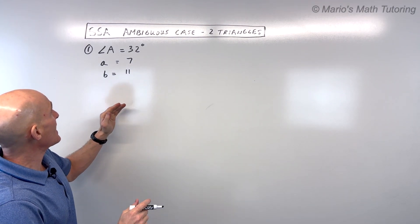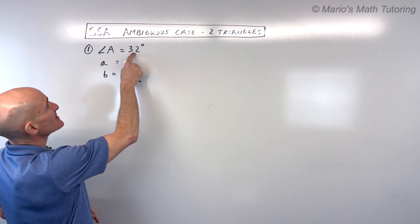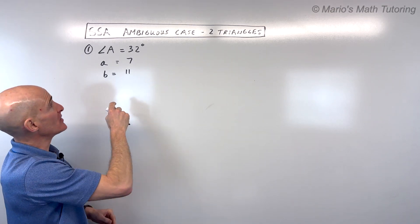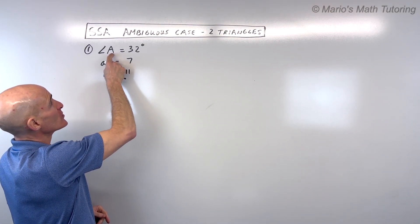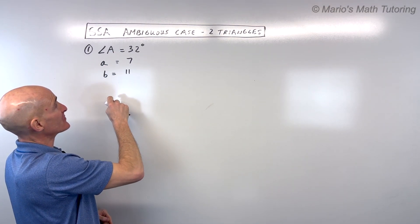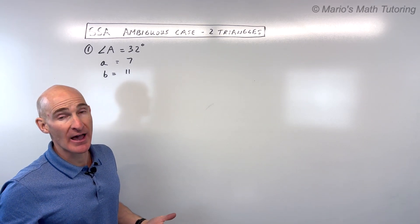In the first example, all we're given is angle A, which is 32 degrees, side A — the side across from angle A — with a side length of 7, and side B, which is 11.